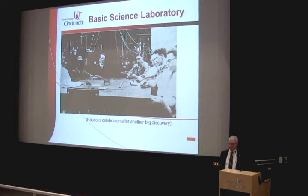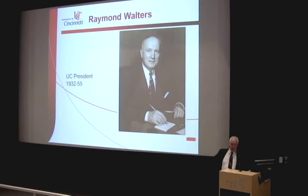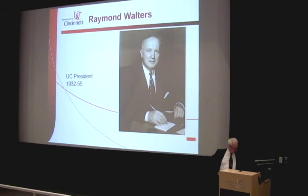Schneider never wanted to be president and wanted to end his career back in the dean's office, so he submitted his resignation after just four years. In January of that year, he happened to bump into a 46-year-old dean from Swarthmore College who was in Cincinnati to address the Association of American Universities. His name was Raymond Walters, and his speech so impressed Schneider that Schneider gave him a tour of the campus and passed his name on to the board of directors. Walters was named UC's next president in March of 1932.